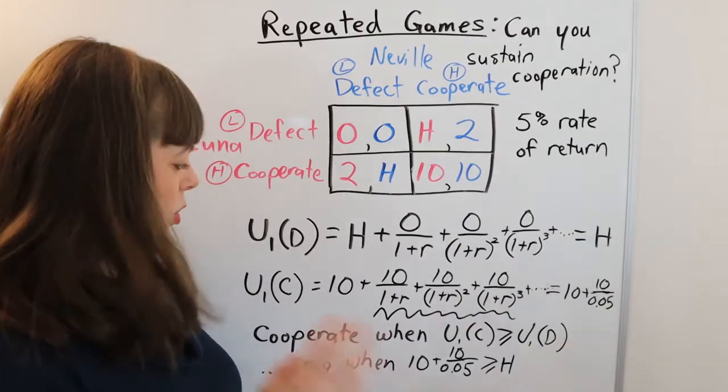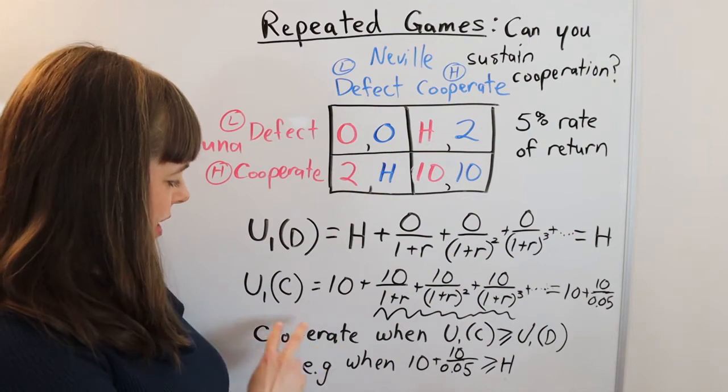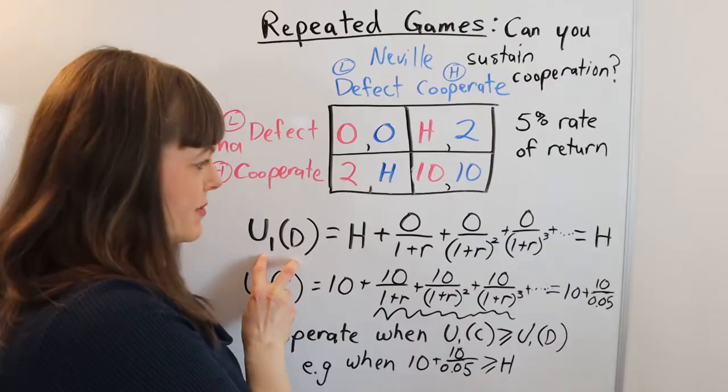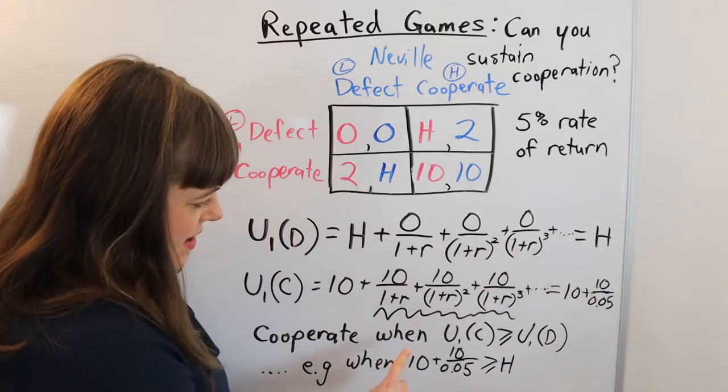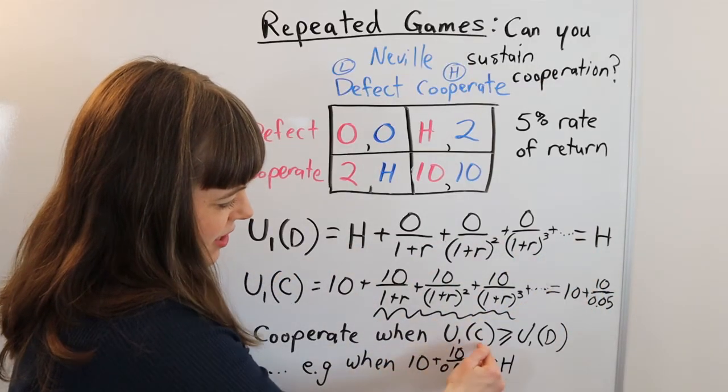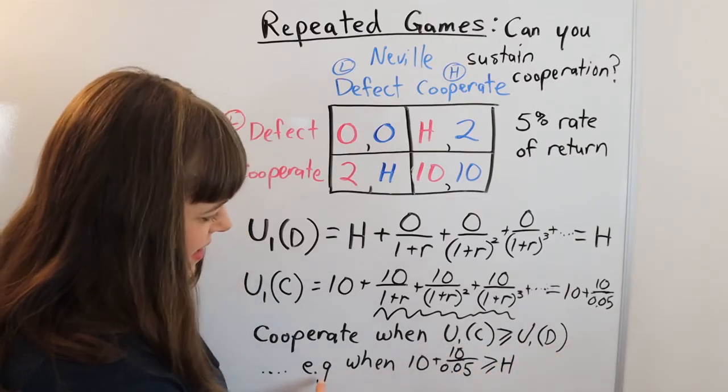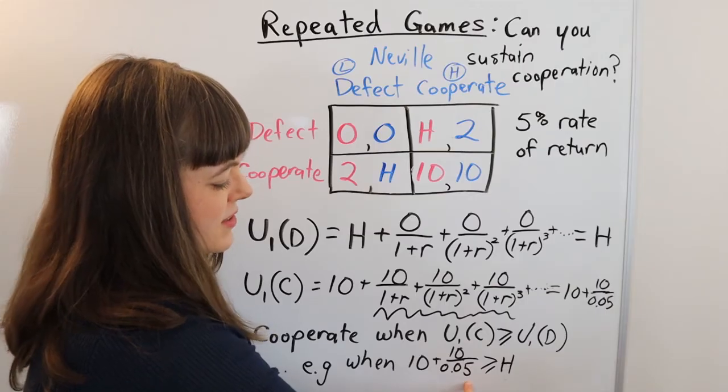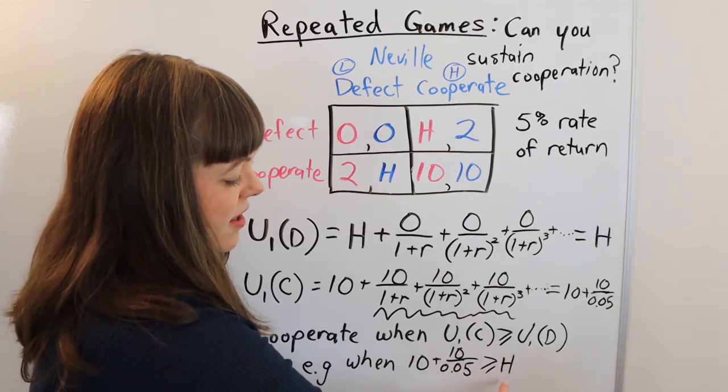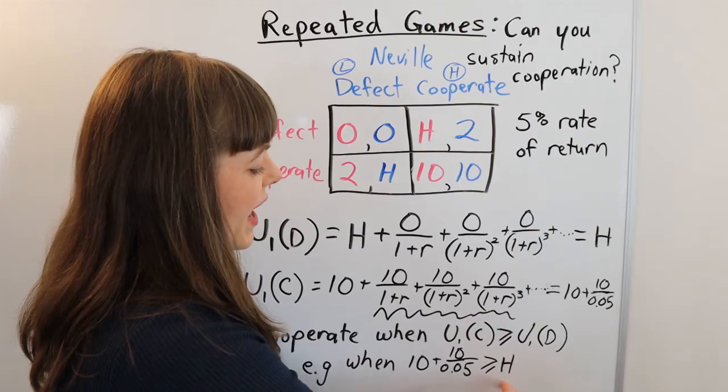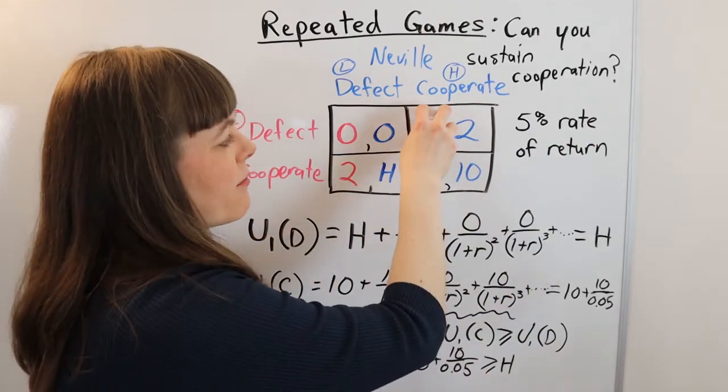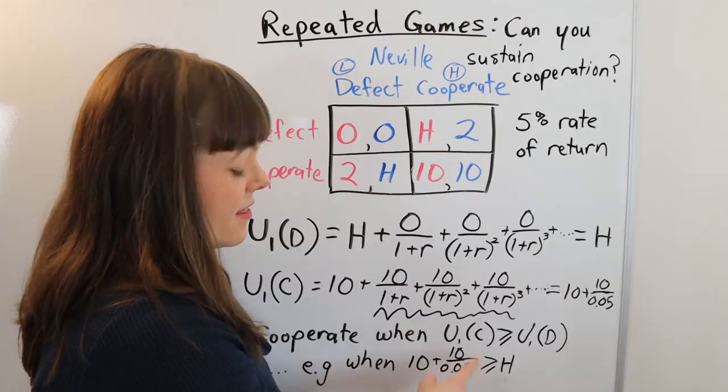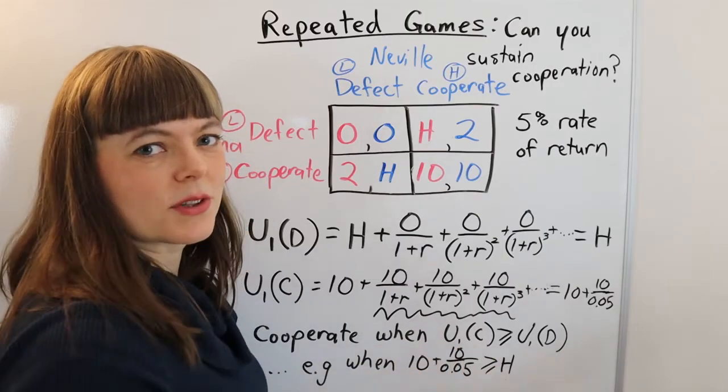So when should Luna cooperate? She should cooperate when the utility from cooperating, which is given by that, is greater than the utility from defecting, which is given by that. And I've just written that out down here, utility of cooperating greater than utility of defecting. And in this case, it's when this value 10 plus 10 over 0.05 is greater than H. Or you could flip that around and say when H, when the value of defecting this period is less than the value of sticking with the cooperative equilibrium.